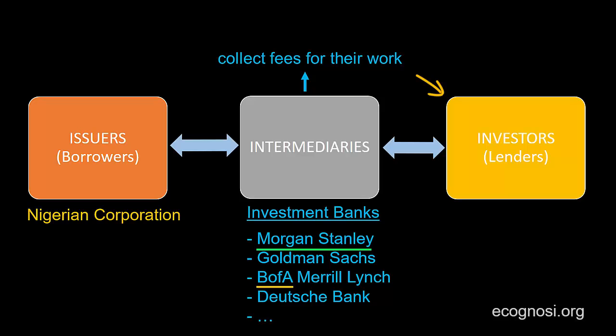Otherwise, they wouldn't have an incentive to invest in these bonds. I use arrows facing in both directions in the graph to show the interaction between the various parties involved. To summarize: investors will buy the Nigerian corporation's bonds and in doing so lend it money. The Nigerian corporation will use that money to expand in Chinese markets. Ideally, this expansion will be profitable, and a portion of the profits will be used to repay the lenders — in this case, the bondholders.